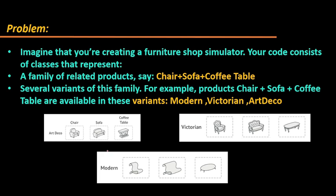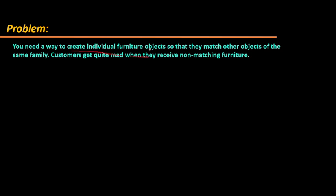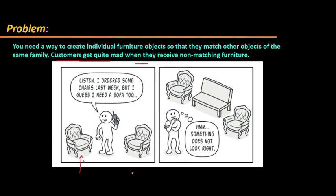The problem is: suppose someone orders two Victorian chairs, and they also want a coffee table that matches — Victorian only. But if you give them a modern table or an Art Deco table, it will look odd. You need a way to create individual furniture objects so that they match other objects of the same family. Customers get quite mad when they receive non-matching furniture.